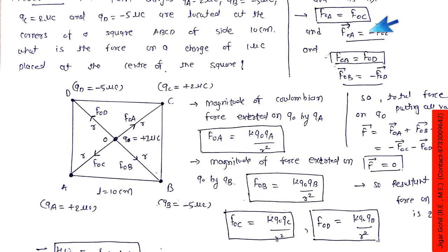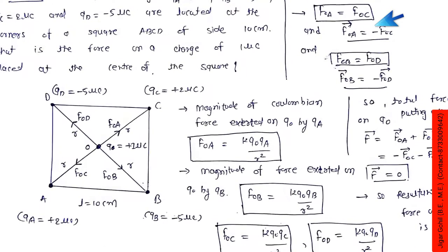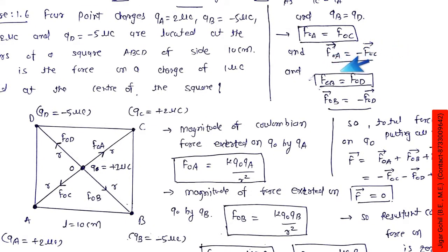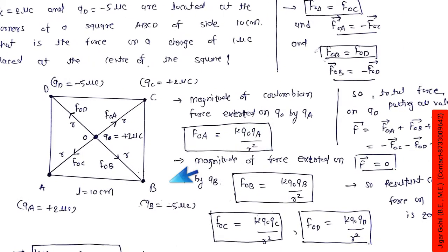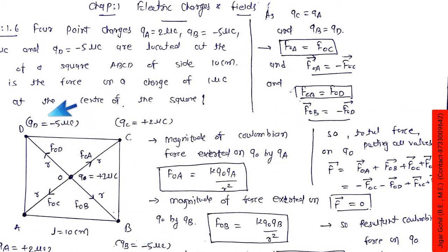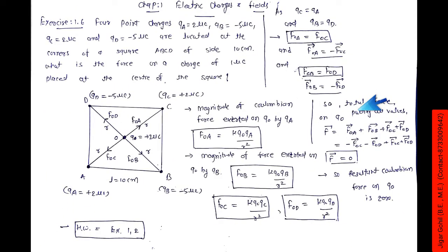Same way, FOD = k·q0·qd / r². Here also qc and qa values are the same, so these force equations are the same, only difference is qa and qc, and they are equal. So we can say that FOA equals FOC, but when we talk about direction, it is opposite. So vector FOA = -vector FOC. Same way, here -5 microcoulomb and here also -5 microcoulomb, so FOD and FOB will be same in magnitude but opposite direction. As qd = qb, we can write FOB = FOD in magnitude, and if we talk about direction, vector FOB = -vector FOD.